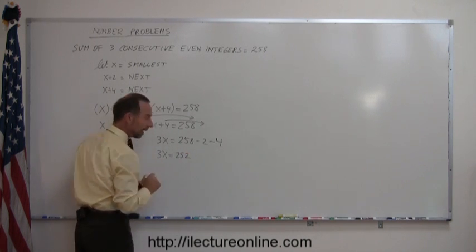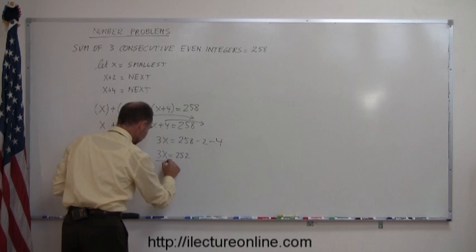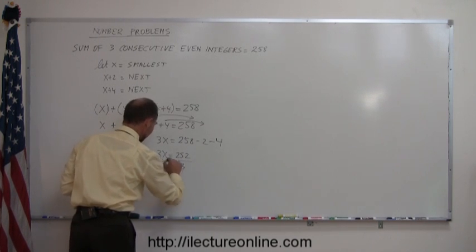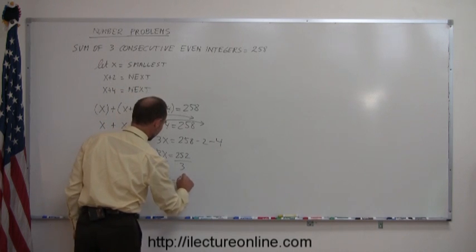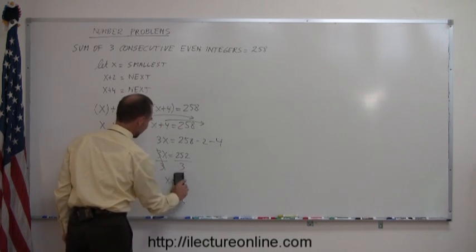And finally, I divide both sides of the equation by the numerical coefficient in front of the x, divide both sides by 3, and I get x equals - oh, not 34, 84.